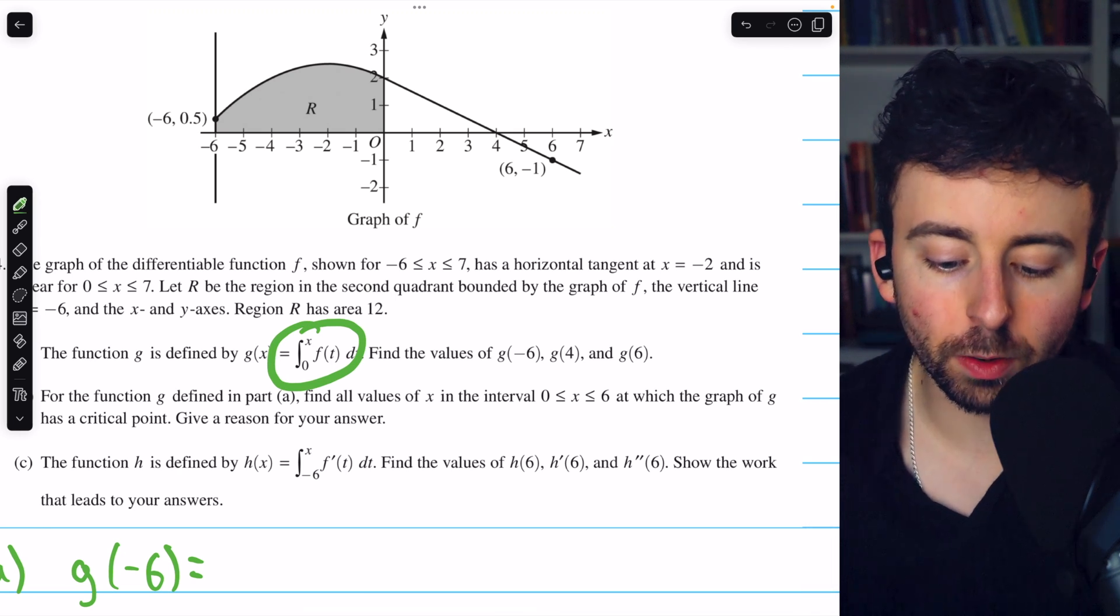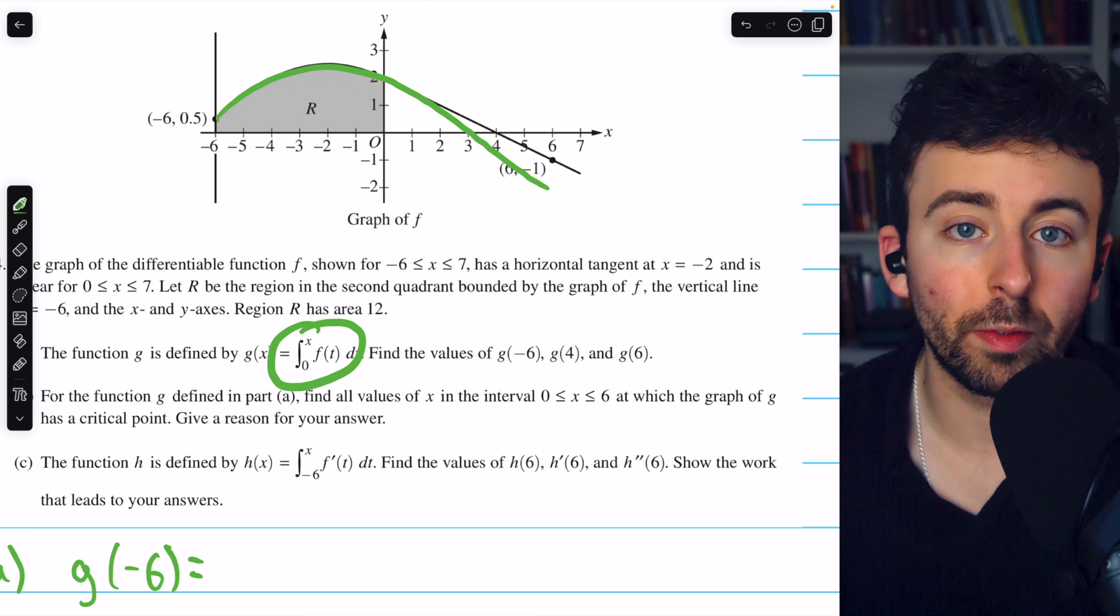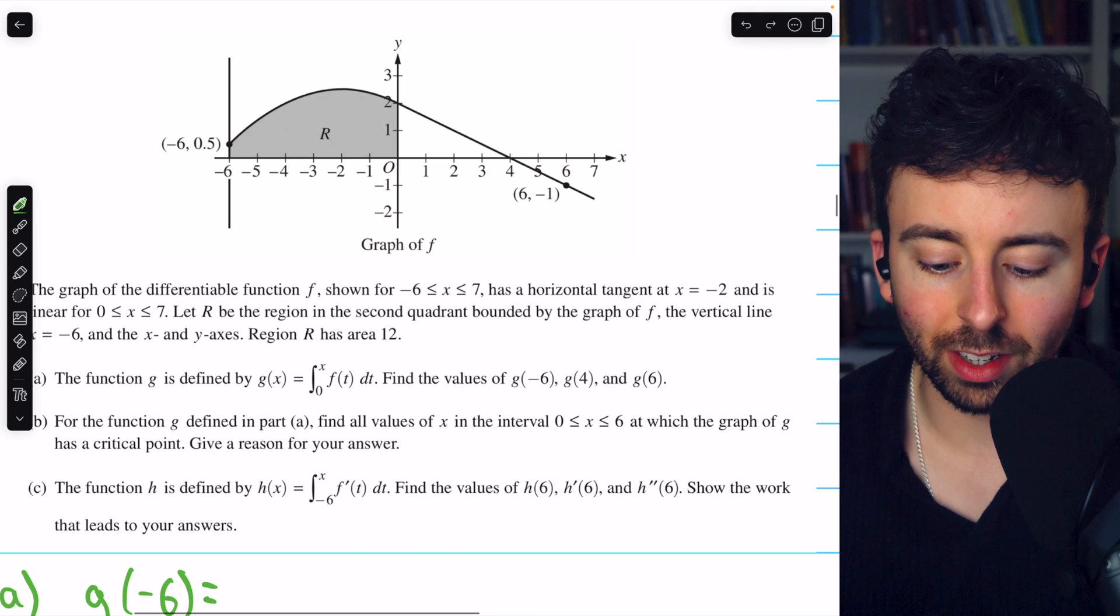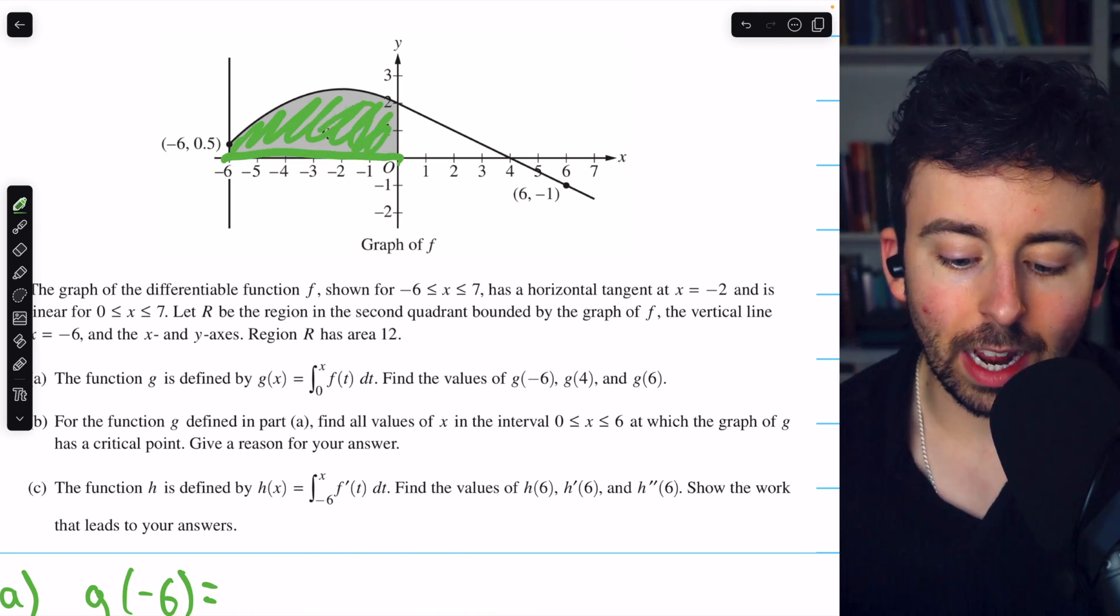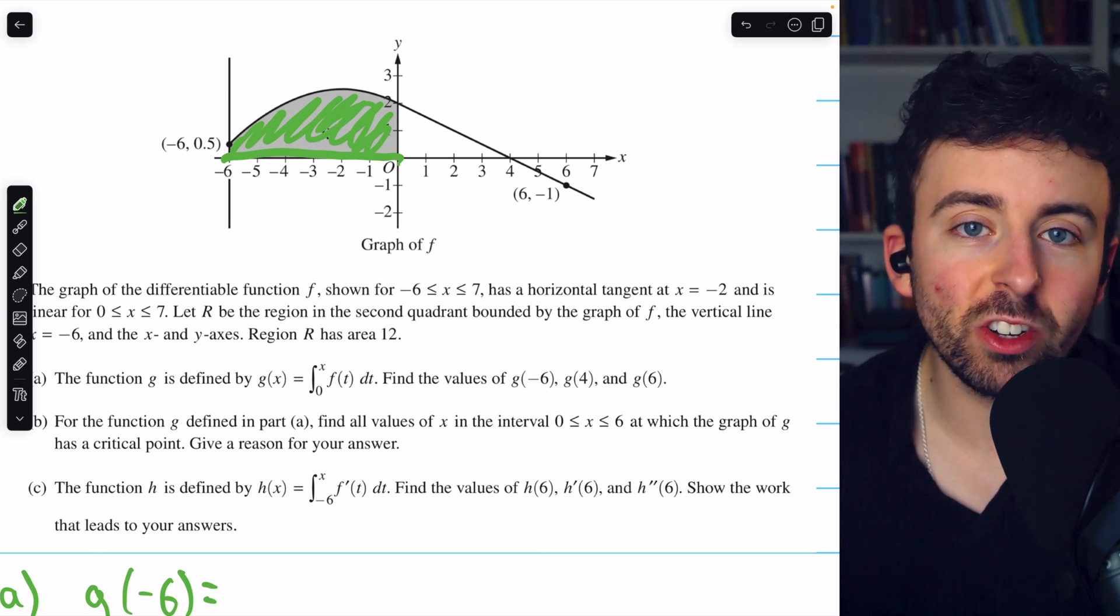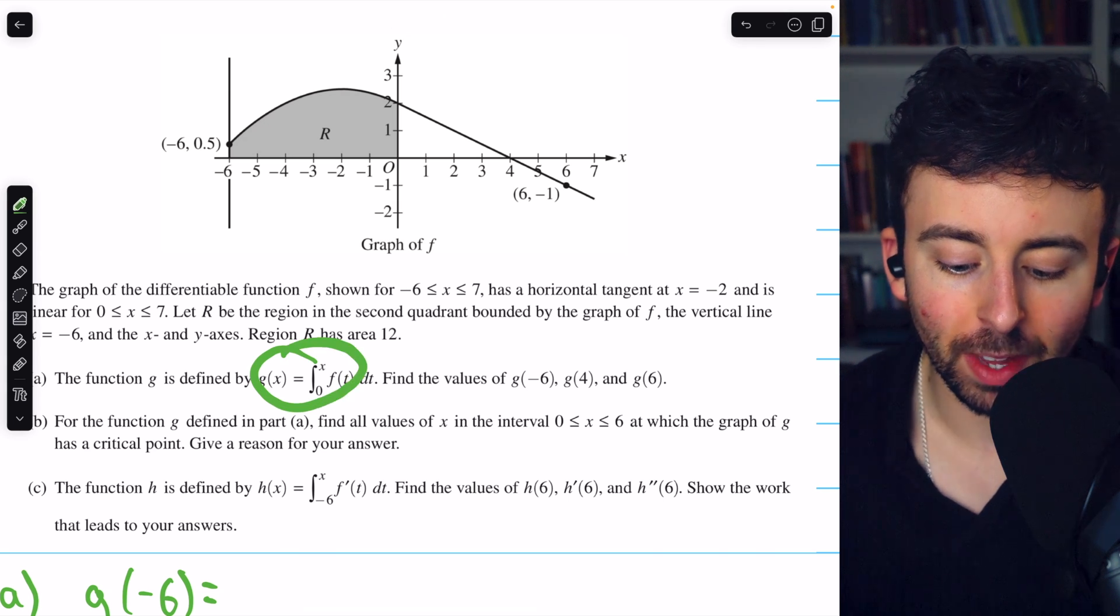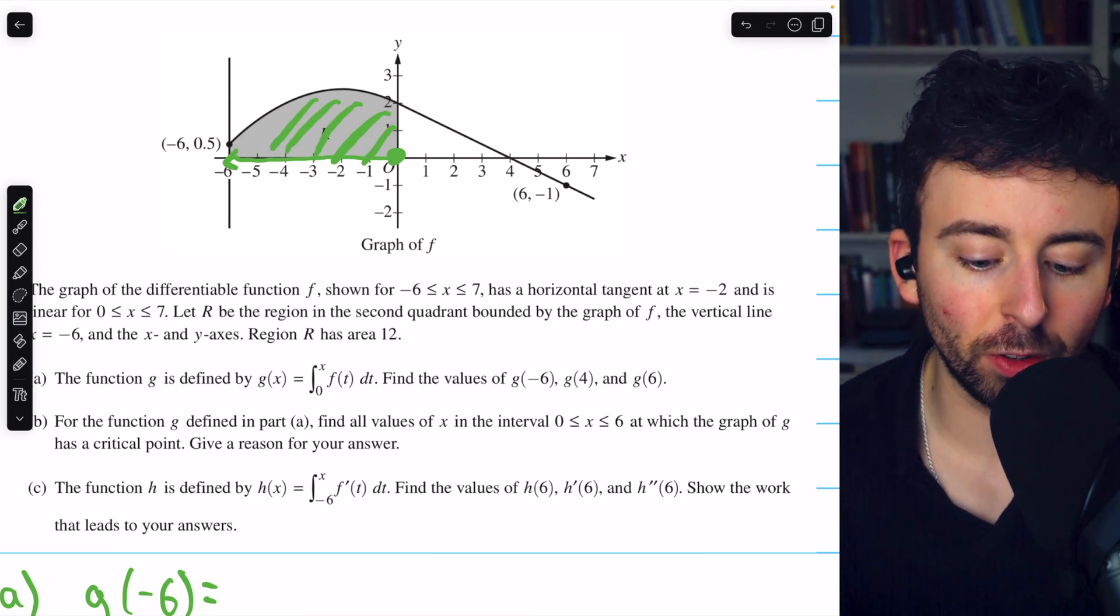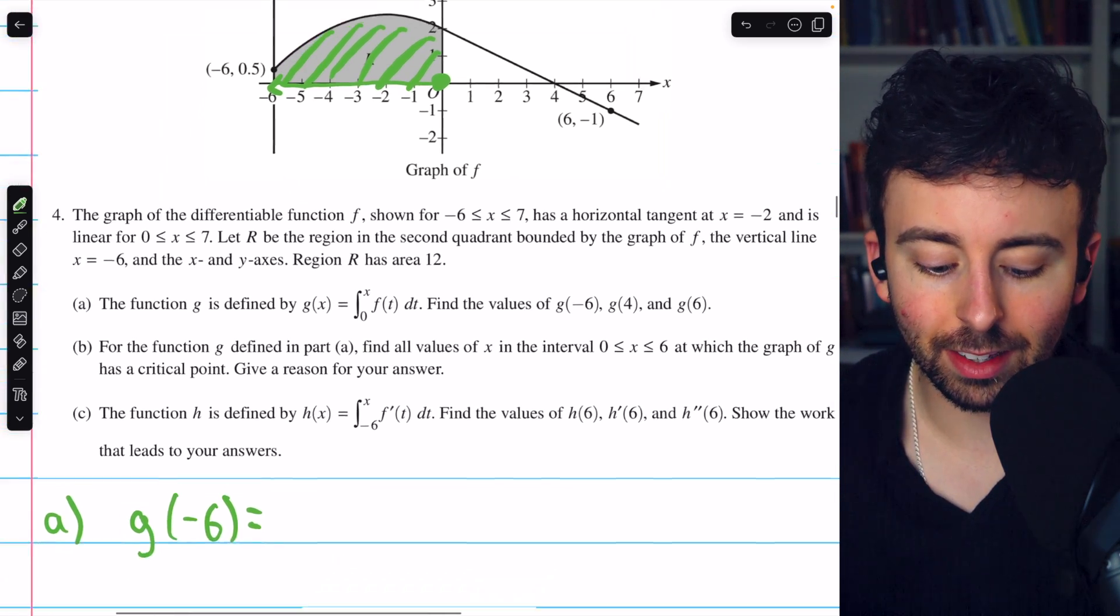it's the area under the function f of t, which is graphed, from 0 to whatever the input is. So if the input is negative 6, g of negative 6 is just the area from 0 to negative 6, this area here. We were told the area of that region is 12, but we do have to be careful because the function g is going to calculate this area backwards, going from 0 to negative 6. Hence, it will actually consider this area as negative 12. So g of negative 6 is negative 12.